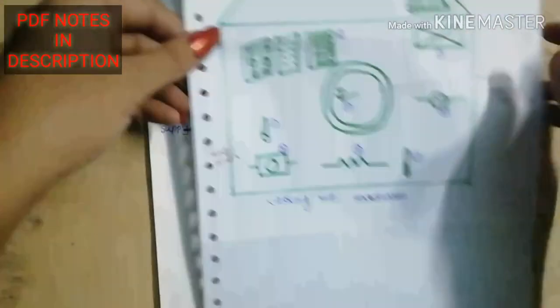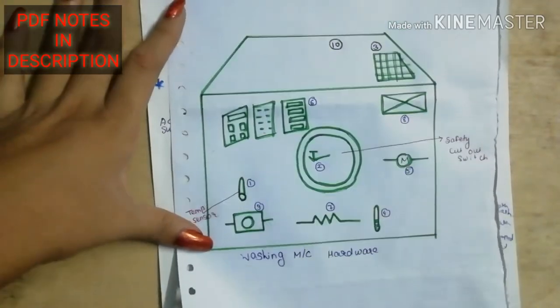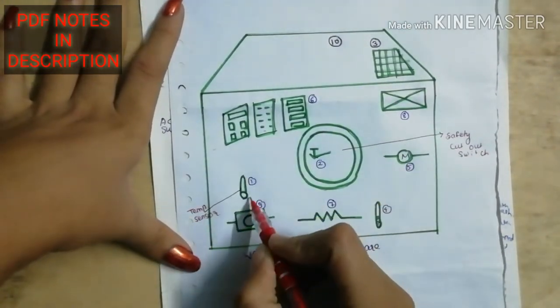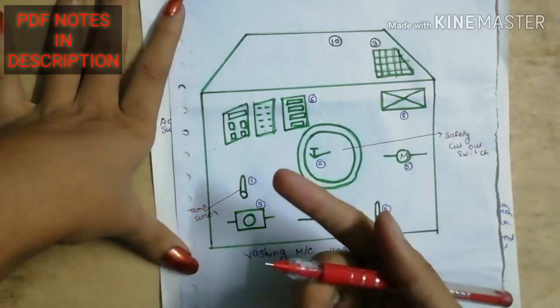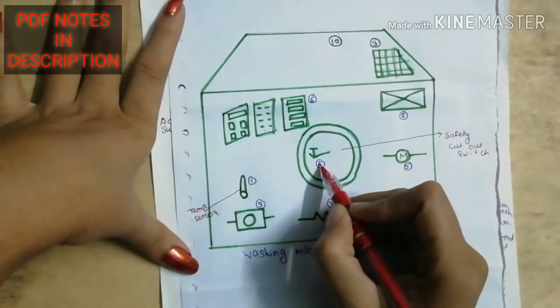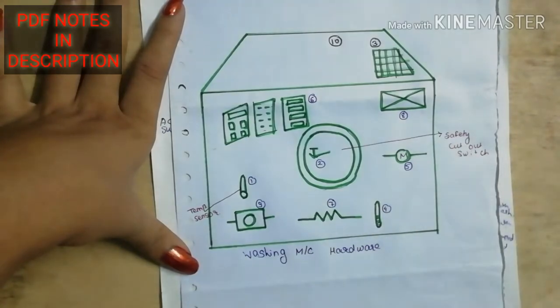Let's see the washing machine hardware diagram. In the washing machine hardware diagram, first of all is the temperature sensor, which senses water temperature. This is a safety cut-out switch. There is a microcontroller in place.